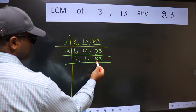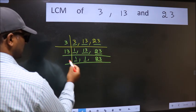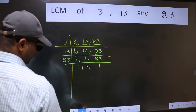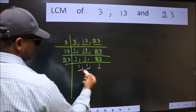So focus on the next number 23. 23 is a prime number so 23 divides 23. So we got 1 in all the 3 places.